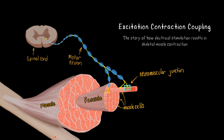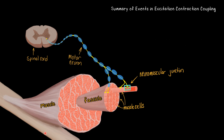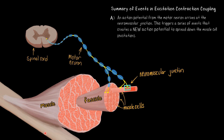In this video, I'm going to be explaining excitation-contraction coupling, so we're going to go all the way from the motor neuron down to the muscle cell and then down to the proteins actin and myosin. But before we can get into the details of the process, I just want to do a big overview. During excitation-contraction coupling, an action potential from the motor neuron arrives at the neuromuscular junction, and that's going to cause a series of events that creates a new action potential which spreads down the muscle cell. Action potentials are electrical impulses, and the electrical impulse from the motor neuron creating a new electrical impulse in the muscle cell is the excitation.